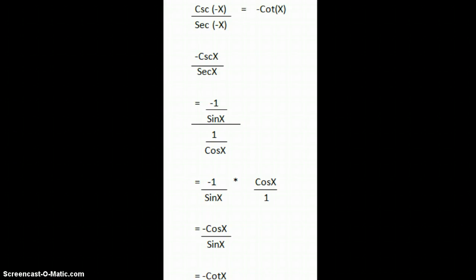Okay, so we're going to change both of those into their reciprocal identity. So we get negative 1 over sine x over 1 over cosine x. Flip and multiply. You get negative cosine x over sine x equals negative cotangent of x by the quotient identity for cotangent.